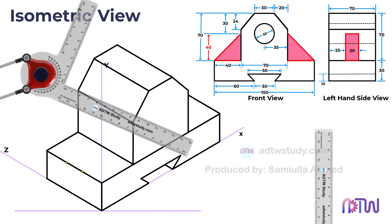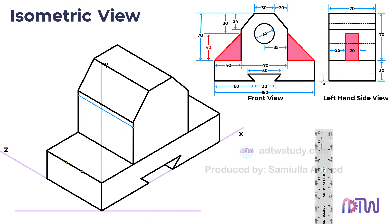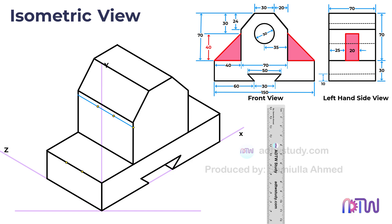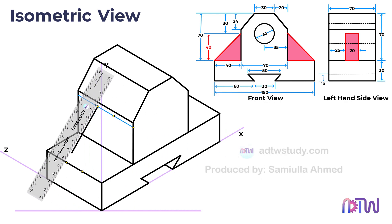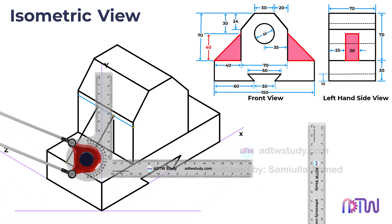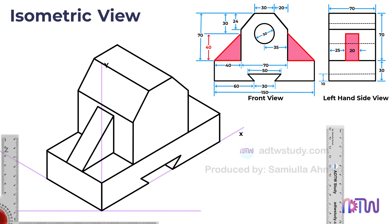Mark a point at a height of 40 millimeters from the base and draw a line parallel to the z-axis. Similarly, mark the center point on this line and mark points at a distance of 10 millimeters on either side. Finally, connect these points to complete the inclined portion and add all necessary details. With this step we have successfully constructed the side portion of the object.